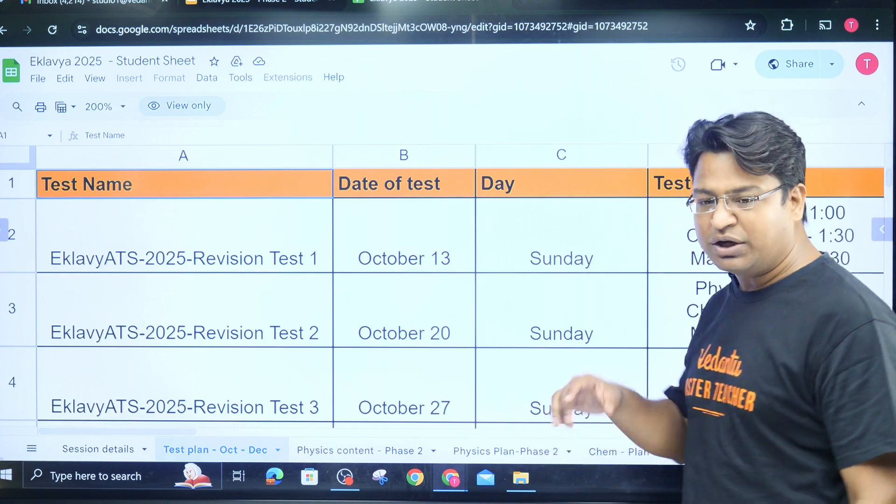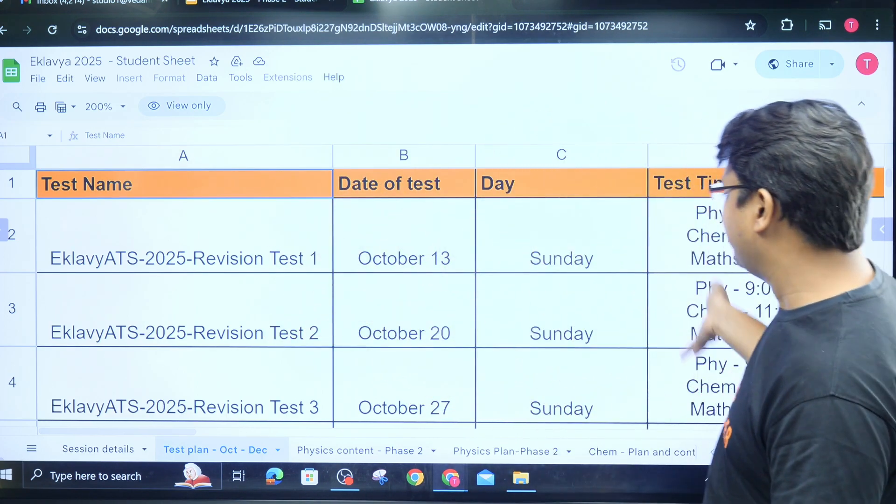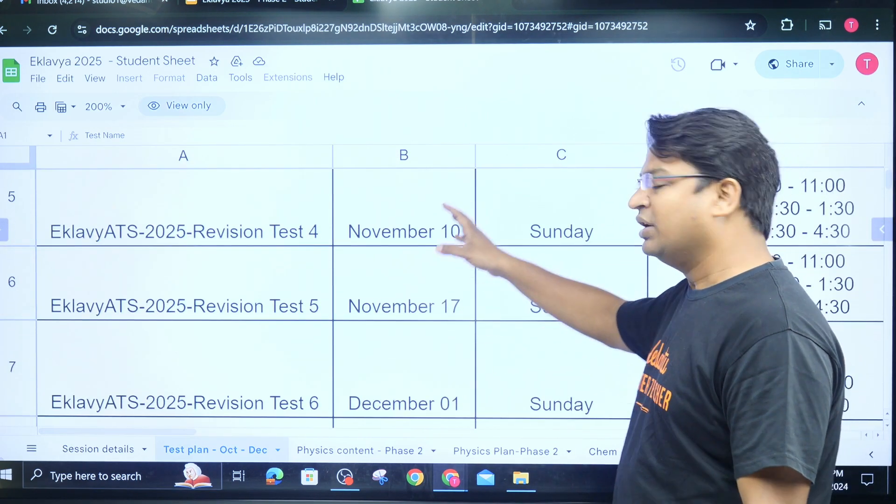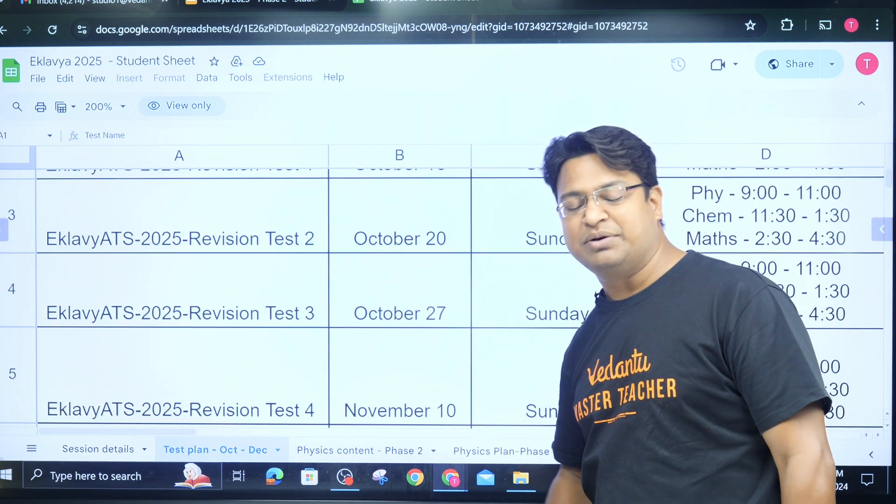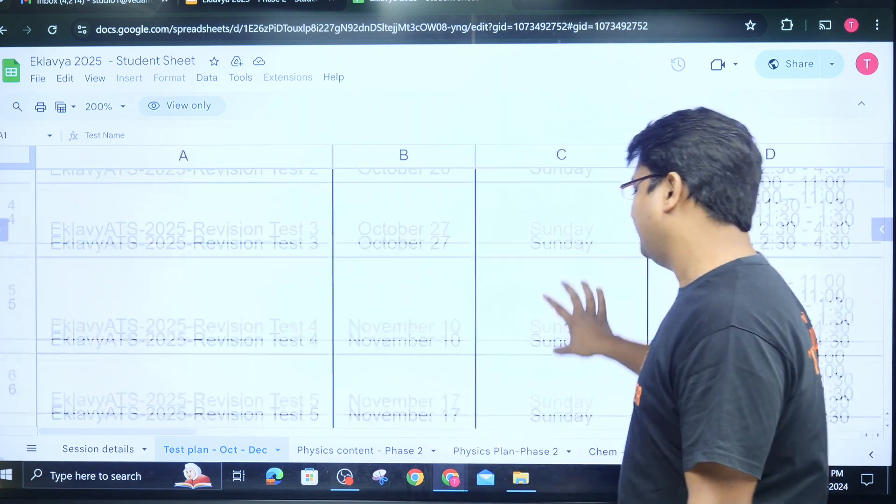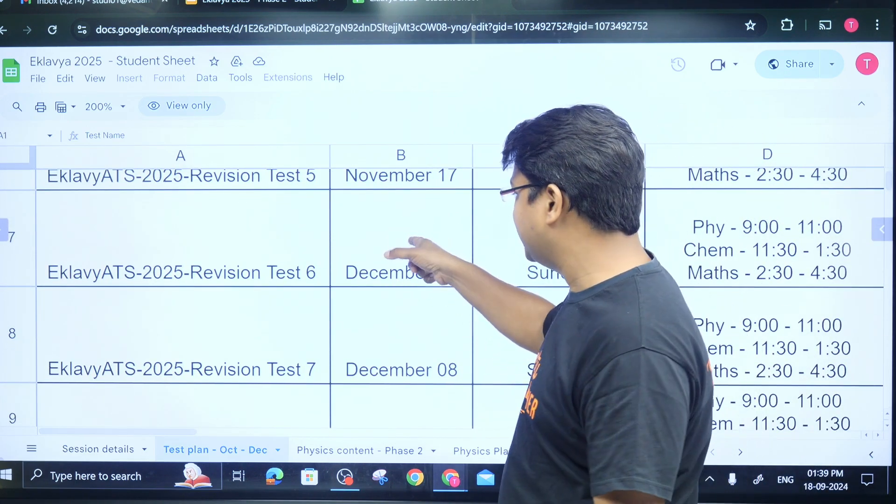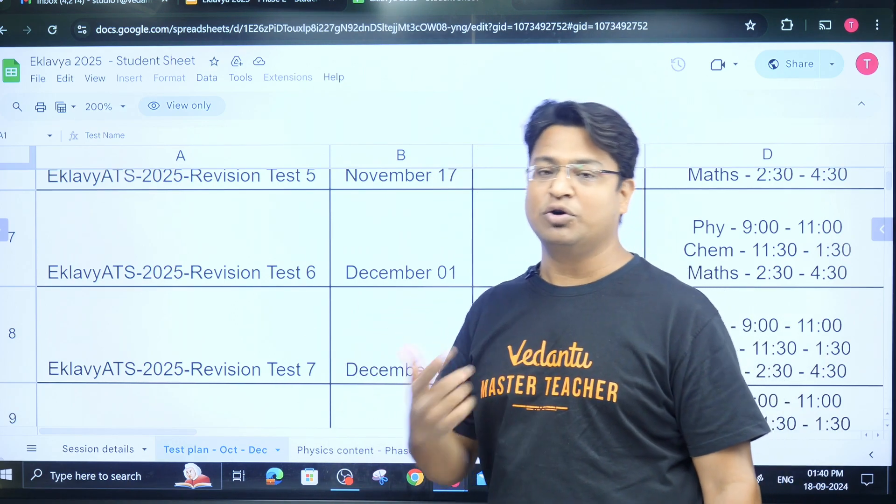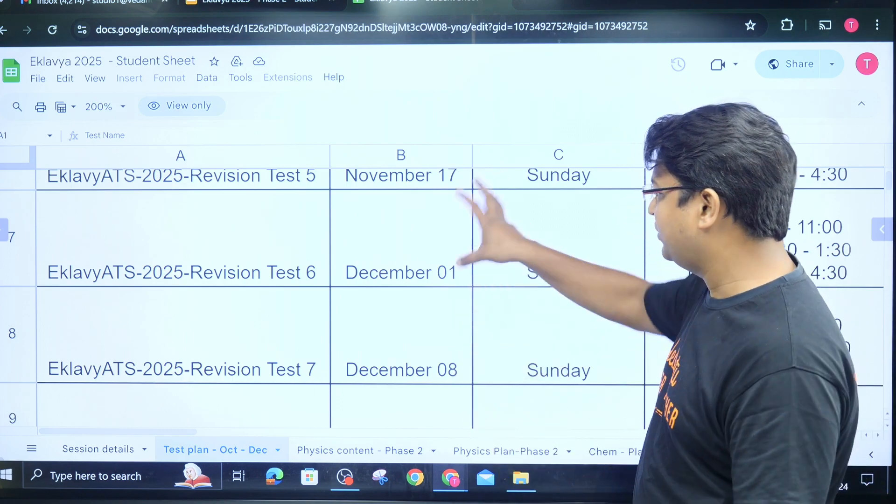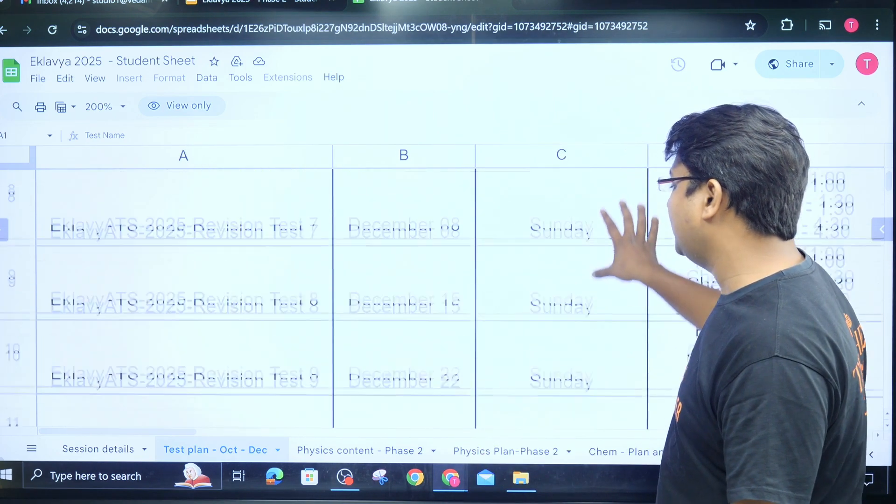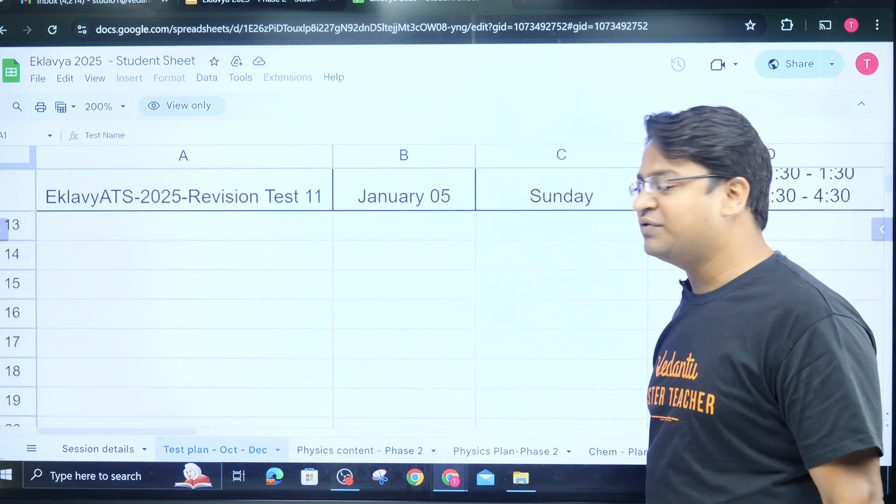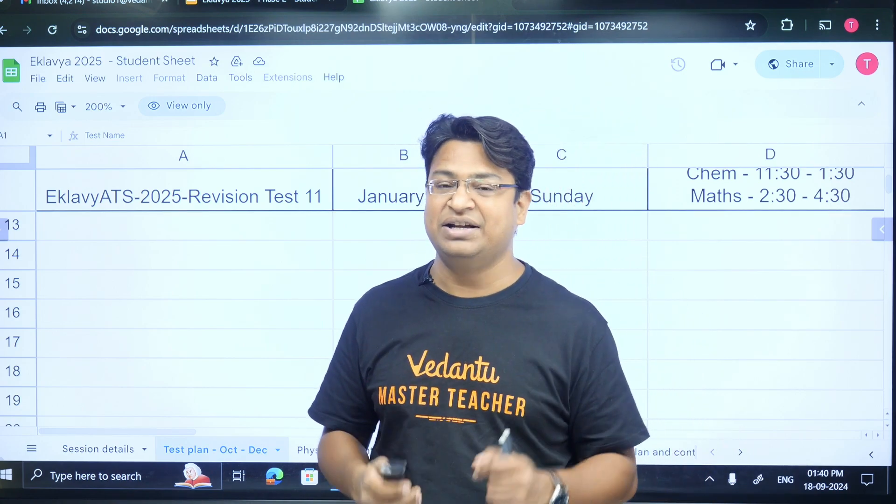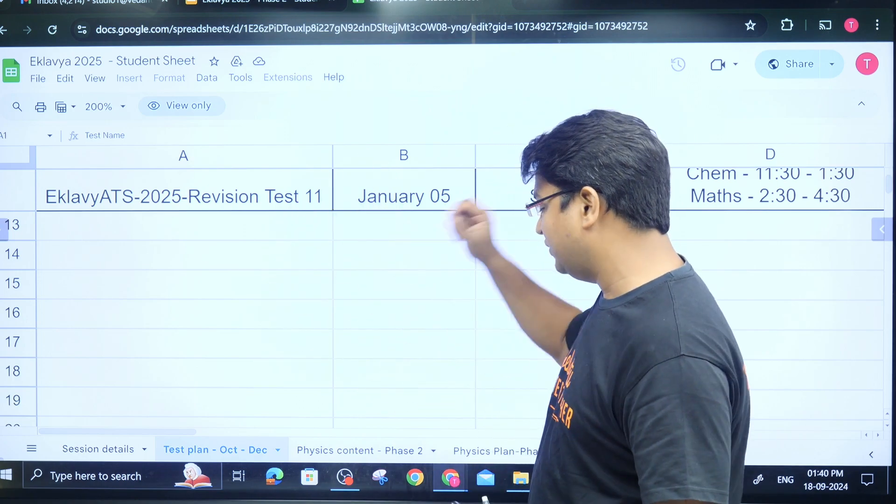This is the timetable of Eklavya and here this also contains the exact date and time and subject of the session. So date, time, session number, everything is written here. So you will know when you have classes. These classes will also reflect on your dashboard, but if you want the details you can check here. Now let's come to the test plan. Your first test is on October 13th, then October 20th, 27th, then November 10th. The missing Sunday in between is because of Diwali. Then November 17th, and the missing Sunday on November 24th is because of the national standard examinations like NSEJS Olympiad exam. Then December 1st, 8th, 15th, 22nd, 29th, and then January 5th. That will finish your Phase 2.